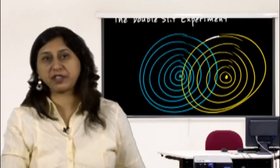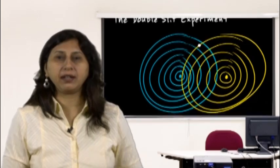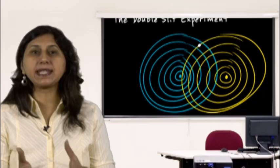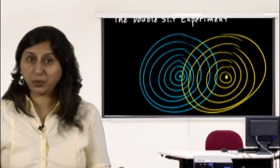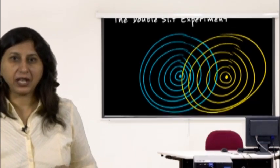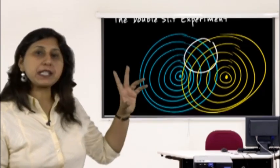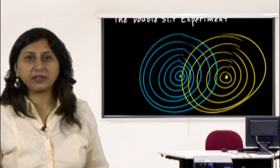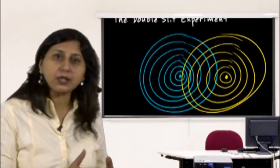Where the peak or crest of one wave coincides with the crest of another, we get constructive interference. When the crest of one wave crosses the trough of another, they cancel each other out — that is destructive interference. You can see the interference pattern form, which is characteristic of waves from one source interfering with waves from another.